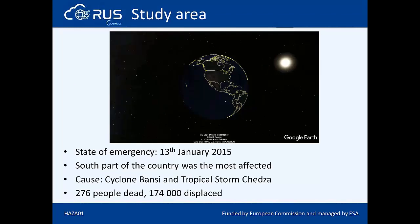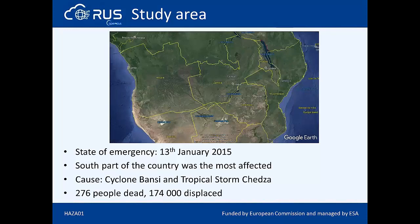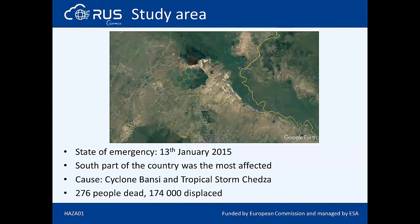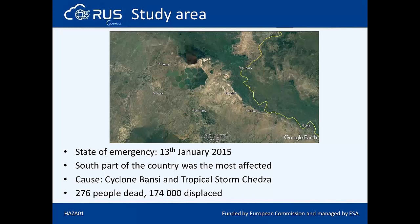Among the different natural hazards, floods account for almost half of the weather-related disasters recorded during the last 20 years. The Republic of Malawi declared a state of disaster on January 13, 2015. Fifteen districts of the southern part of the country were affected due to heavy rains related to cyclone Bansi and tropical storm Chezza. Throughout December 2014 and January 2015, more than 150% of normal rainfall was experienced in the area. The flood left 276 people dead, 174,000 people displaced, and some areas completely inaccessible. It also caused extensive damage to livestock, infrastructure, and crops. In total, 64,000 hectares of land were damaged.